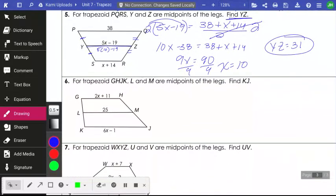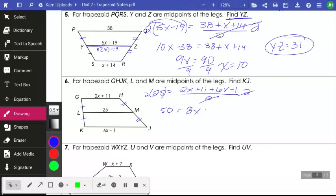Similar kind of thing here. All right. I know that L is the midpoint of the leg it's on and M is the midpoint here. So if you look at that, that means that this is a midsegment. Okay, so I know that the midsegment is equal to the average of my bases. I'm going to add 2X plus 11 plus 6X minus 1. And if I'm averaging, I have to also divide by 2. I'm going to now multiply both sides by 2 so that I have 50 is equal to. I'm going to go ahead and combine these. 8X plus 10.